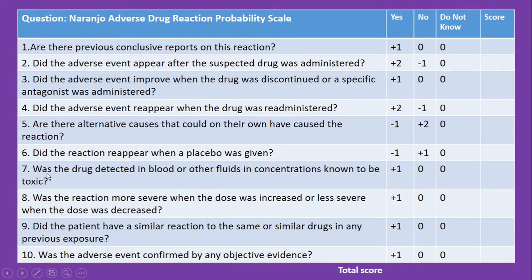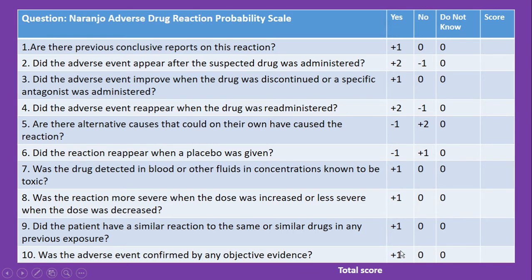Question number seven: was the drug detected in blood or other fluids in concentrations known to be toxic? If yes, it is plus 1; and 0 for both no and do not know. Question number eight: was the reaction more severe when the dose was increased or less severe when the dose was decreased? If yes, it is plus 1; and 0 for both no and do not know. Question number nine: did the patient have a similar reaction to the same or similar drugs in any previous exposure? If yes, it is plus 1; and 0 for both no and do not know. The tenth question: was the adverse event confirmed by any objective evidence? If yes, it is plus 1; and 0 for both no and do not know. Once you put the score for each question, you get the total score from all 10 questions.